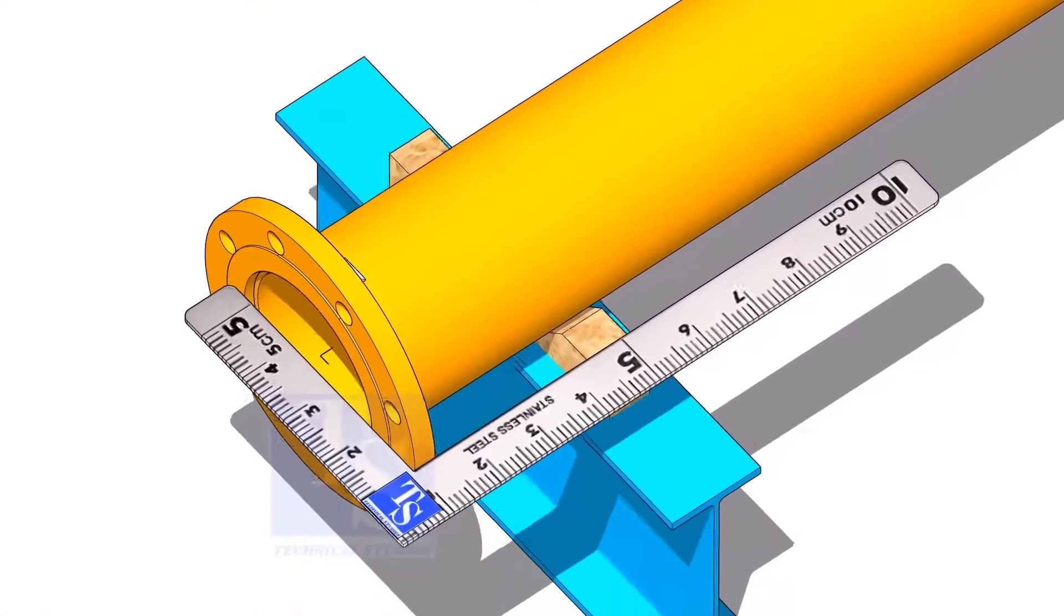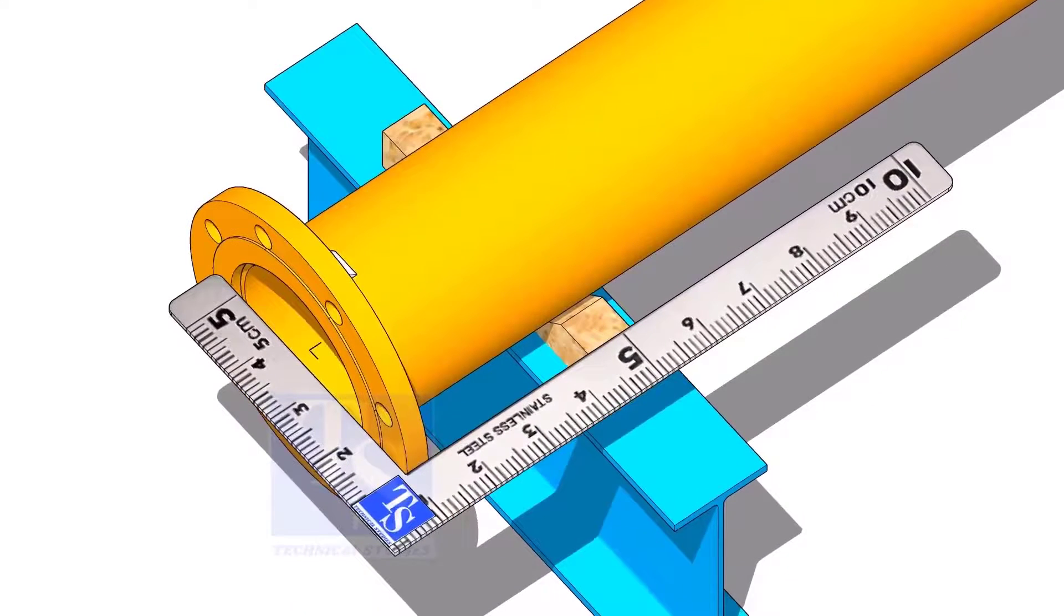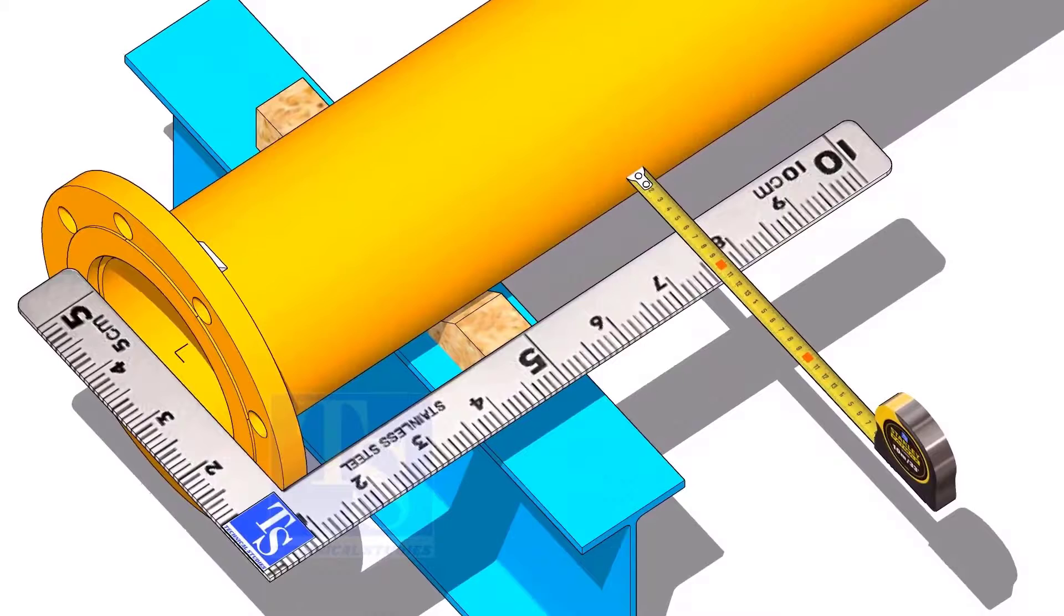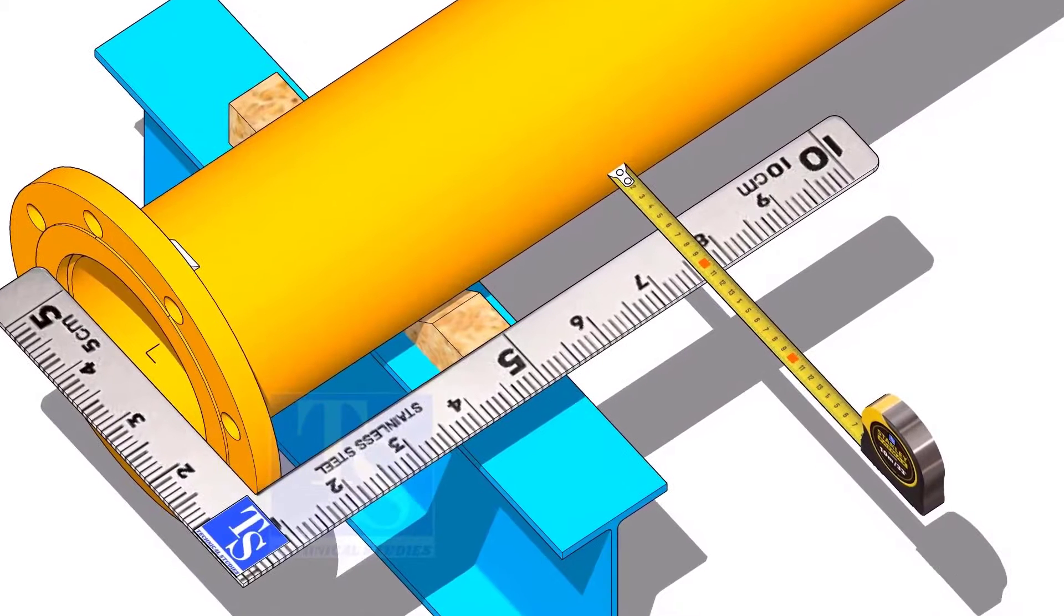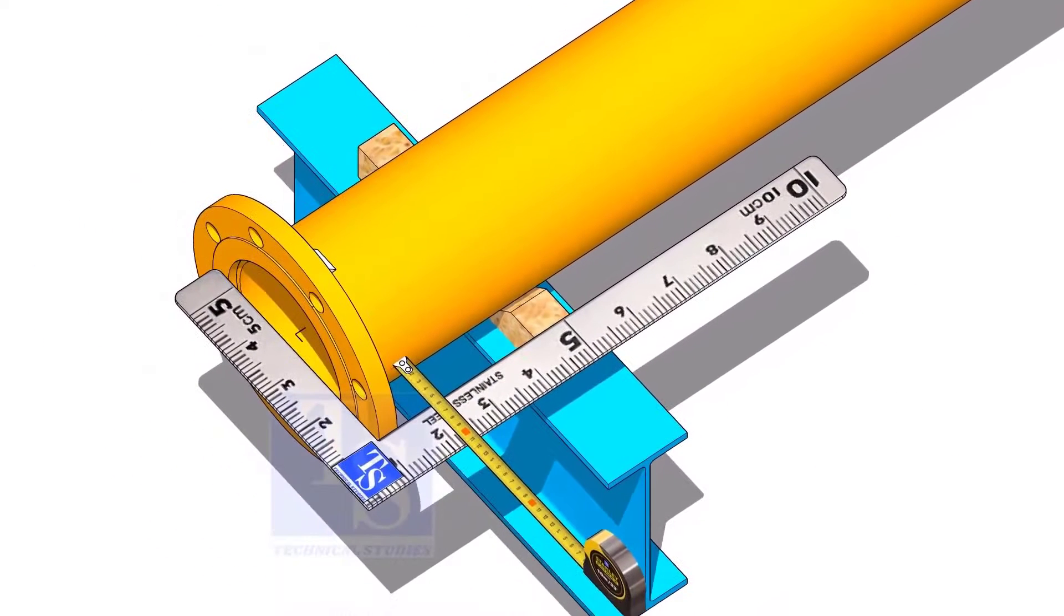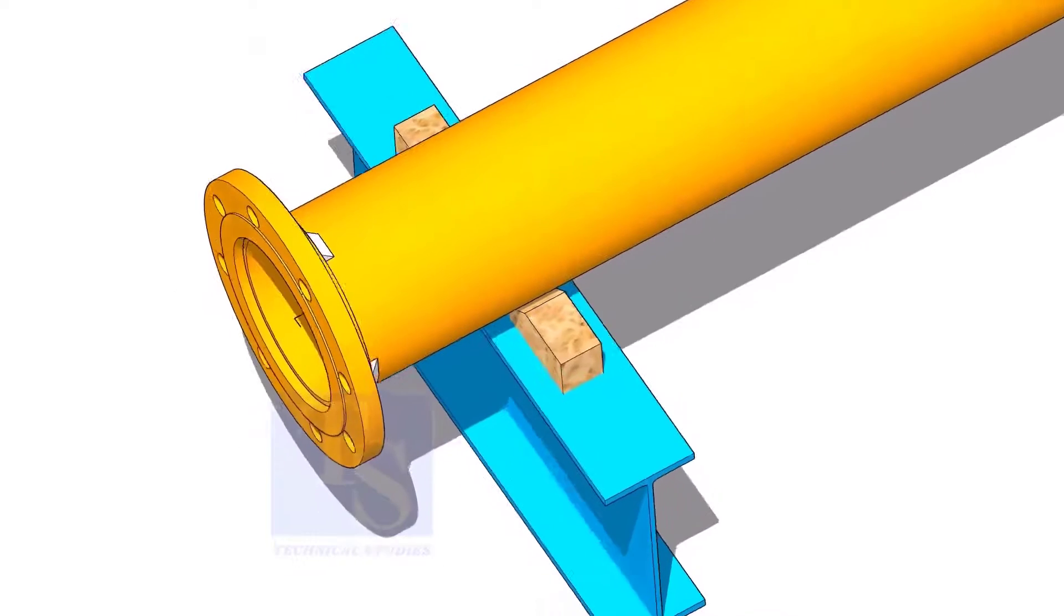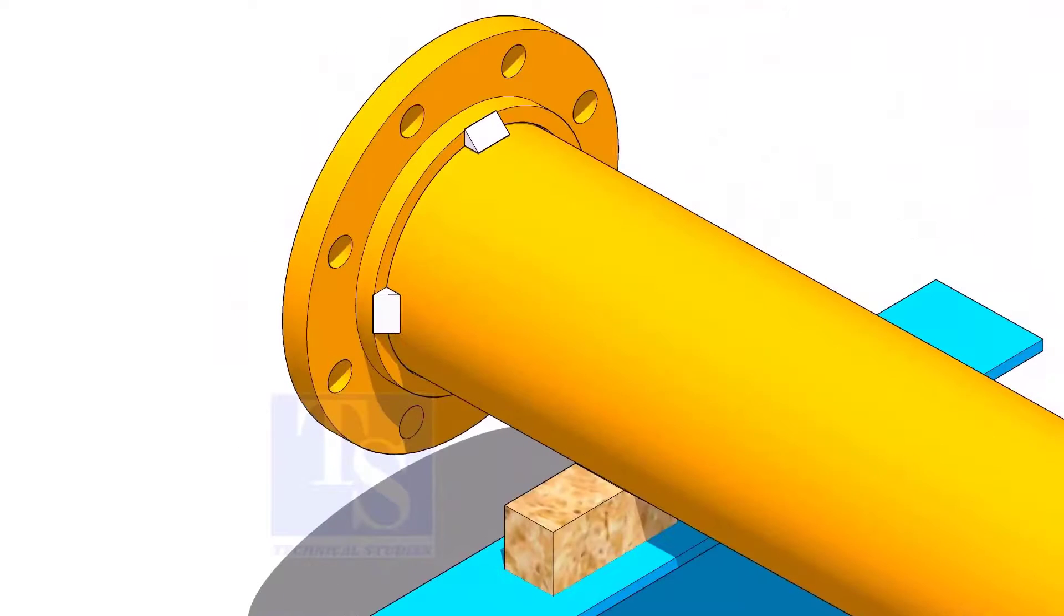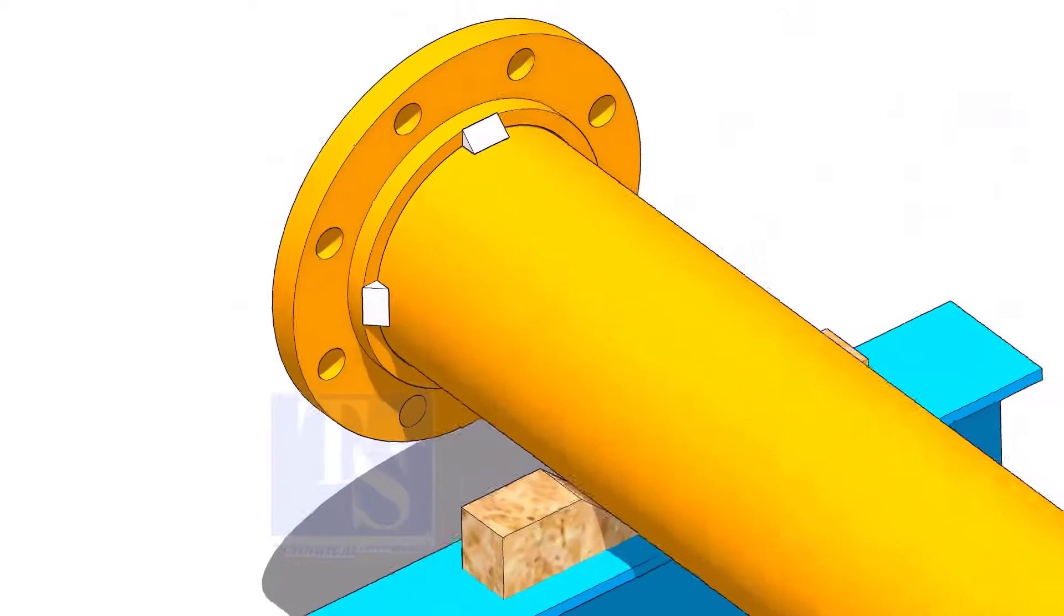Square the flange face horizontally to the side of the pipe. Tack weld on both sides of the flange.